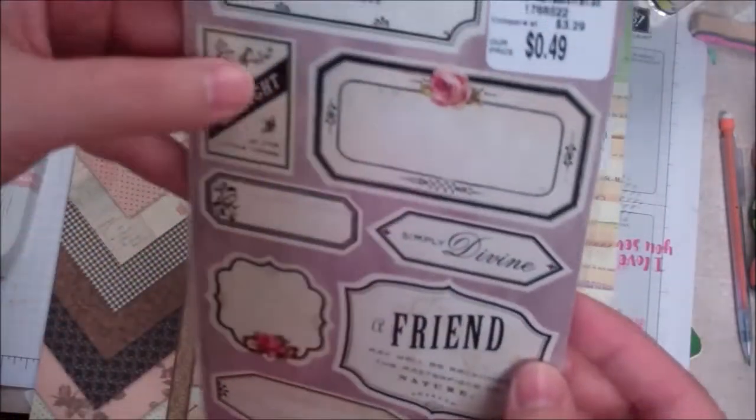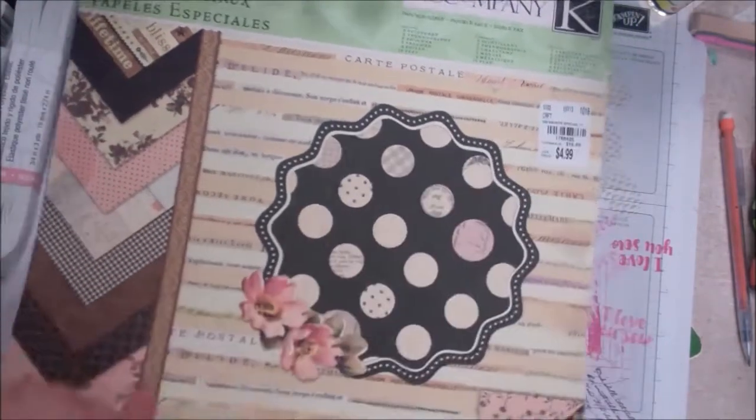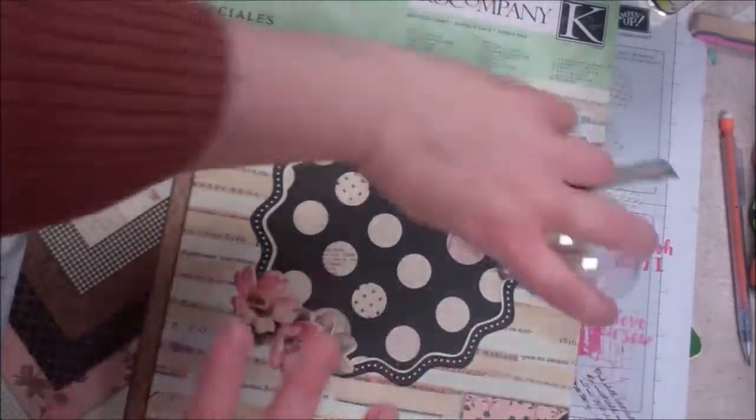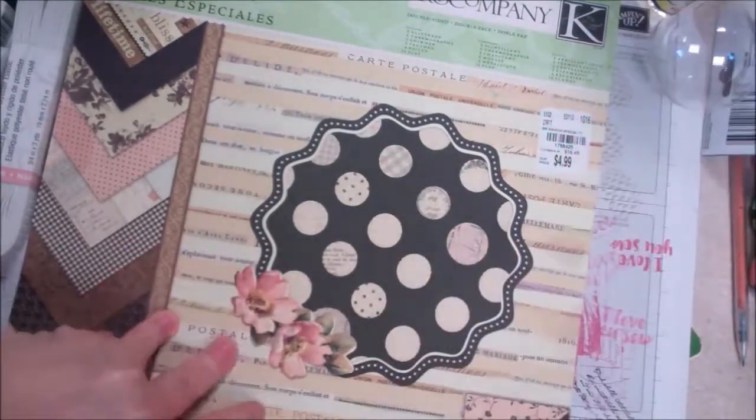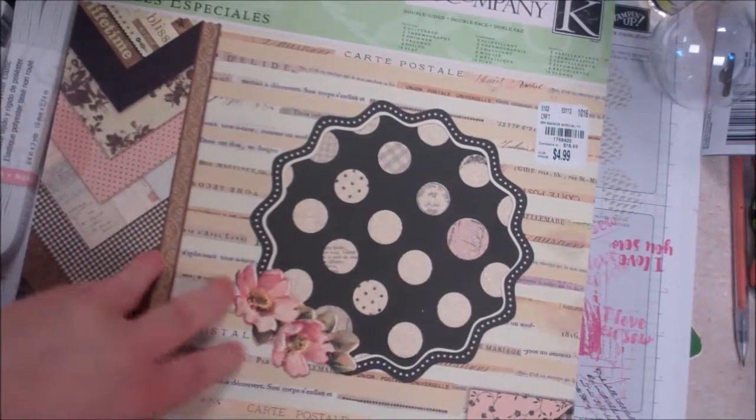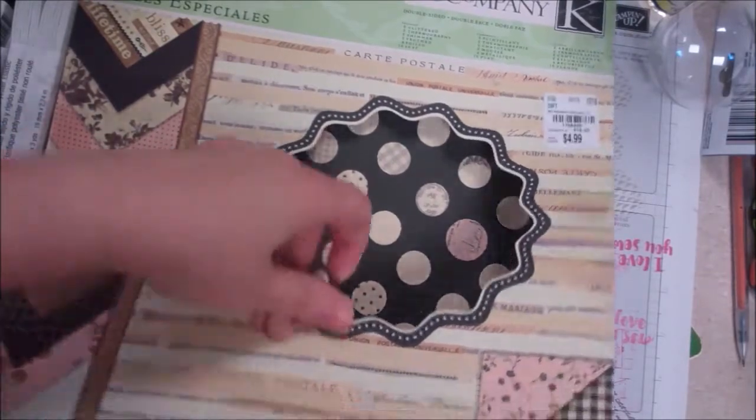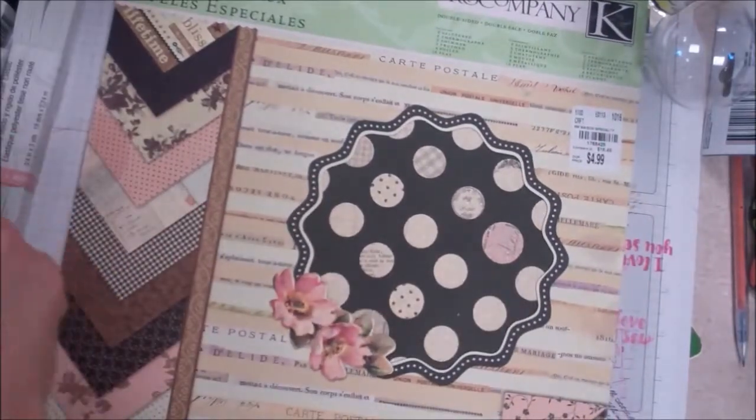And then I just got one paper pad because I've got paper, but I needed some 12x12 that had these colors in it. And so this is double-sided and you get 28 sheets plus the cover, which you can use of course. And I didn't open it.